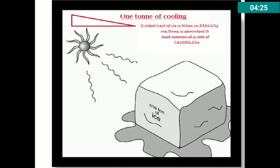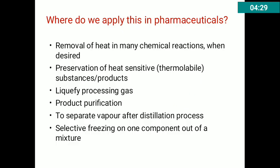I hope you have understood the concept of one ton of refrigeration. Where do we apply refrigeration in pharmaceuticals? What is the significance of studying this principle? In many chemical reactions when we need removal of heat, refrigeration is applied. It is also used for preservation of heat-sensitive or thermolabile substances like insulin, pituitary hormones, and vaccines.